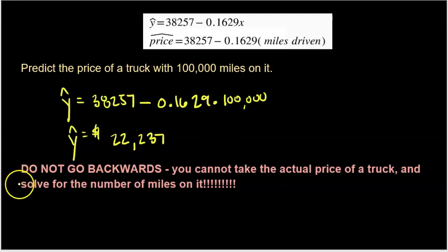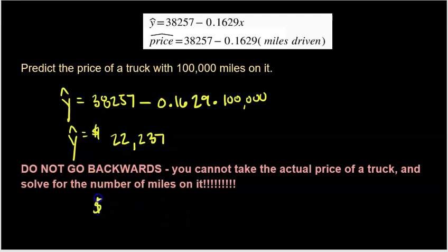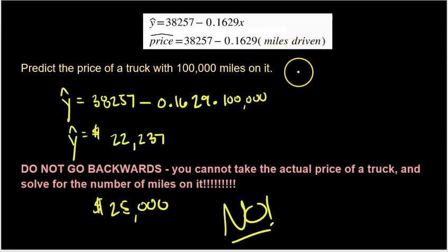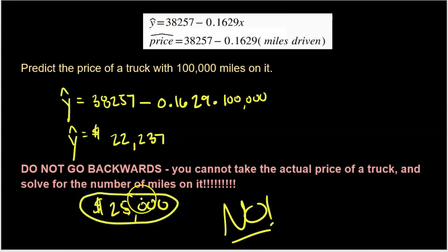Don't say anything that would suggest this is the actual price of a truck with 100,000 miles — this is nothing more than a prediction based on a model founded from our data. These equations cannot work backwards. Don't be fooled: if I said there's a car for sale for $25,000, can you take that price and predict the mileage? The answer is no. This equation is built to do one thing only — plug in the miles and get a predicted price. You cannot plug an actual price into a spot reserved for a predicted price. That is why the hat on the Y is so important.